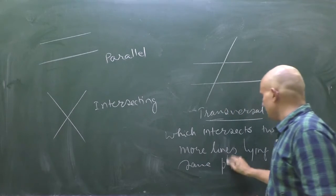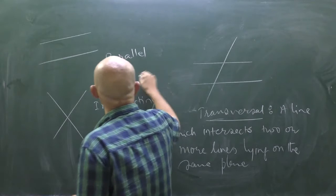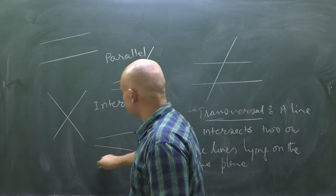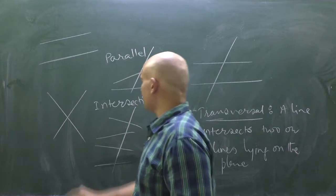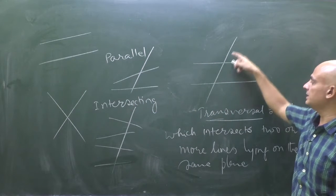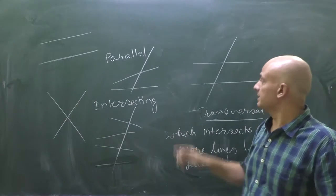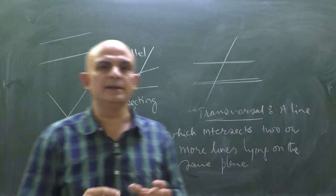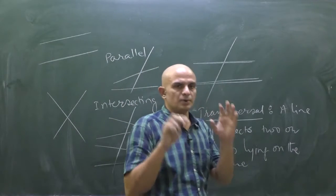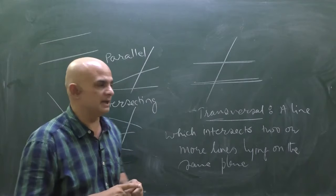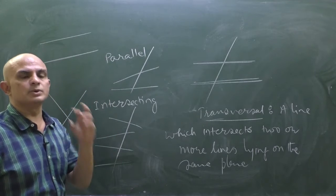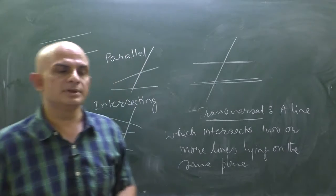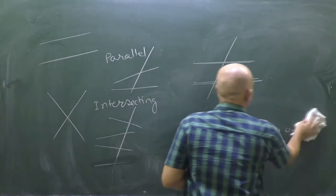The figure looks like this — two parallel lines intersected by a third line. That third line is called the transversal line. This transversal line is intersecting two parallel lines, so it is clear what a transversal line is.